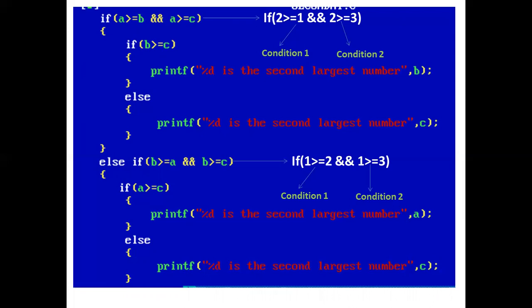Now control comes to the else-if block. The condition is: b >= a (1 >= 2) AND b >= c (1 >= 3). Condition one — 1 >= 2 — is false, so the second condition will not be checked, and control comes out of the else-if block.